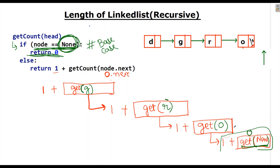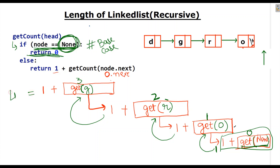So get_count(None) is 0. Here we got 1 plus 0 which is 1, and it will return to get_count(O). Get O is 1, so 1 plus 1 is 2. This will return to get_count(R), which is 2. Then 1 plus 2 is 3, so 3 will get returned to get_count(G). And 1 plus 3 is equal to 4. So 4 is the length of the linked list. This is how we can calculate the length of a linked list recursively. Now let us check both ways — iteratively and recursively — with a Python program.